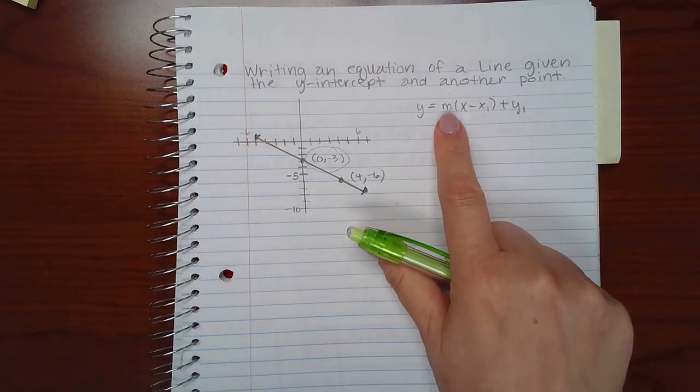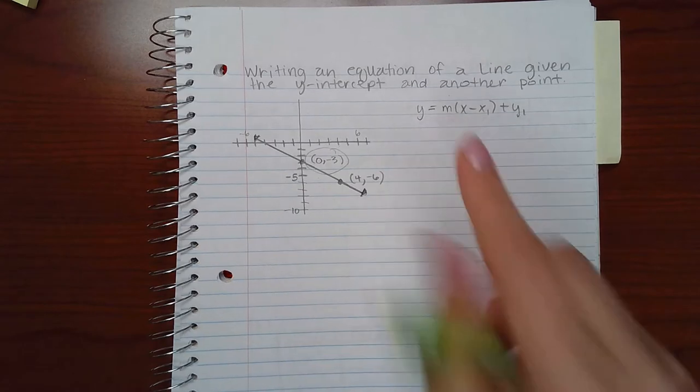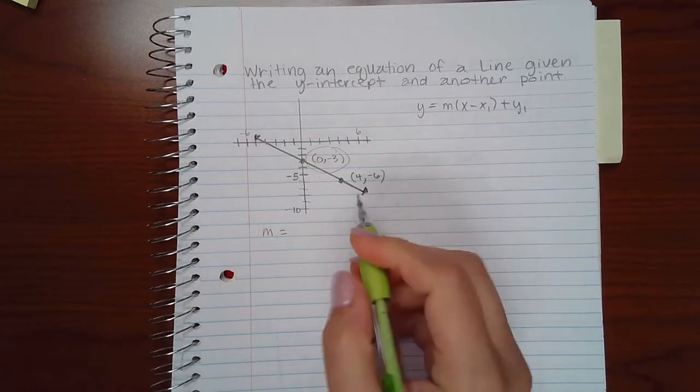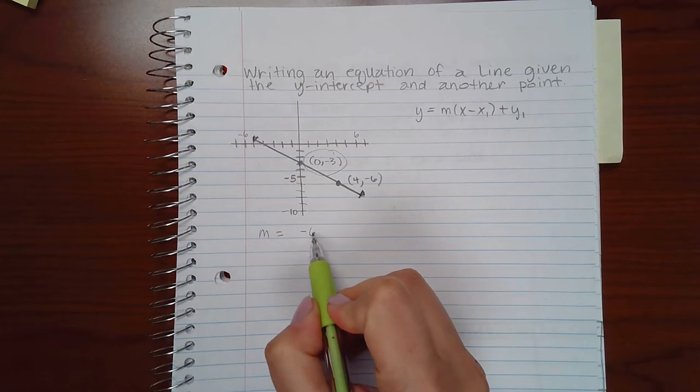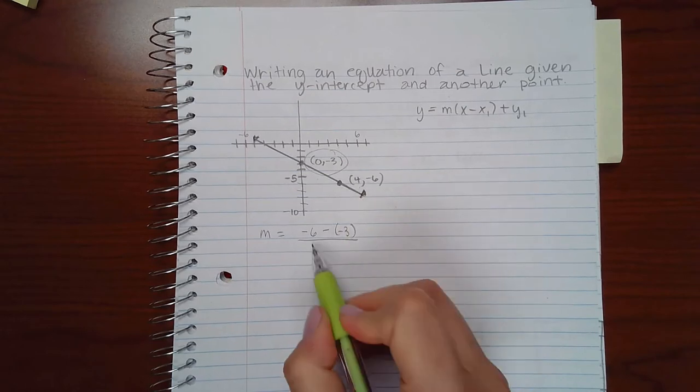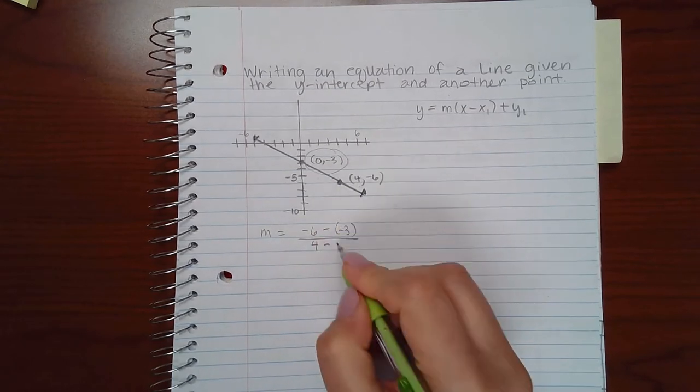However, I don't have the slope, so I do need to calculate that slope before I'm allowed to use that formula. So I'm going to say my y2 minus y1 over x2 minus x1.